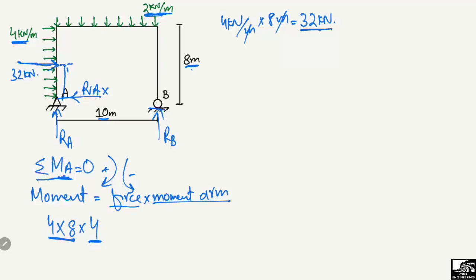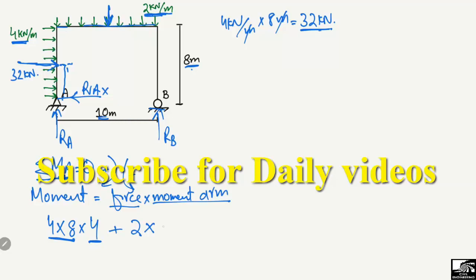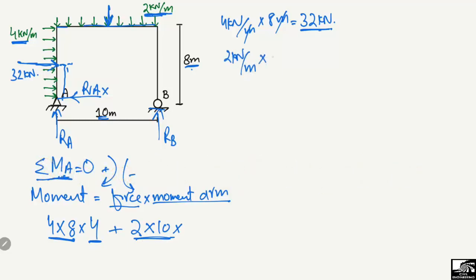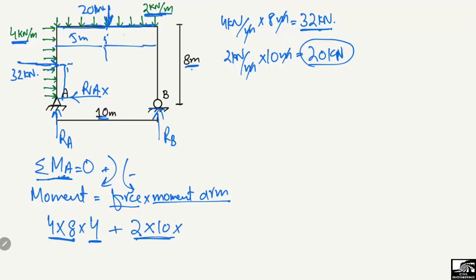The 2 kilonewton per meter load distributed over 10 meters gives a concentrated load of 20 kilonewton acting at the centroid, which is 5 meters from each end. The moment arm is therefore 5 meters. Both the 32 kilonewton and the 20 kilonewton loads create clockwise moments about point A, so both are taken as positive.